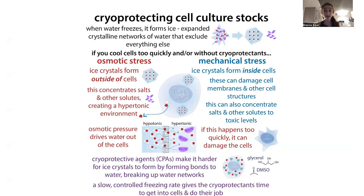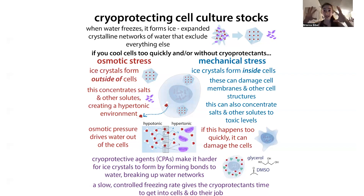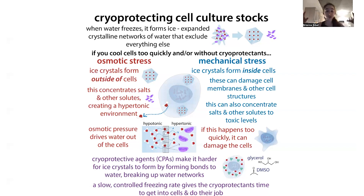What you don't want to happen is for the water to actually freeze. When water freezes, it forms ice — a crystalline network of water molecules bonded to one another. They do this in such a way that the water expands when it freezes. It kicks out anything other than water. Water is very exclusive; it forms these water-water networks. When it freezes, it excludes everything else and forms bulging water networks. Everything else gets more concentrated outside the water, and the water itself takes up more space.